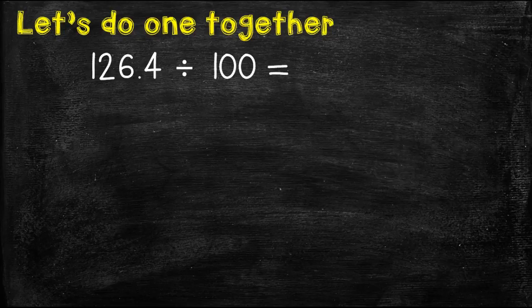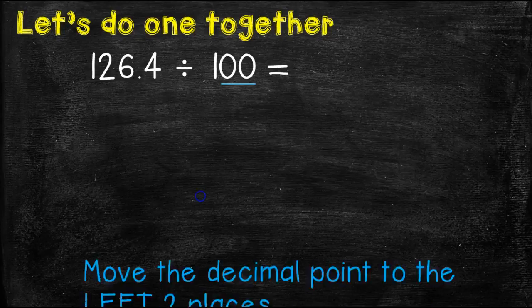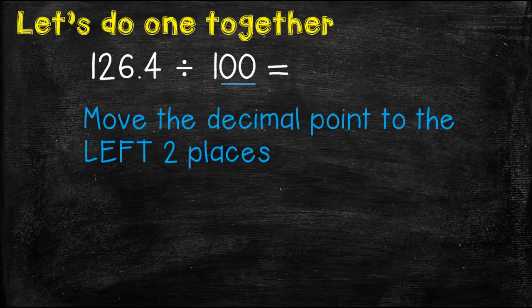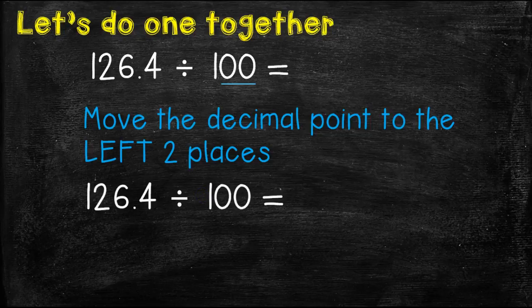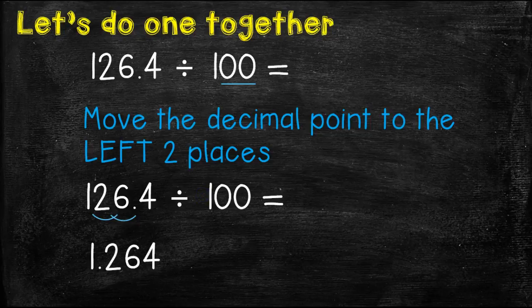So let's do one together. 126 and 4 tenths divided by 100. First thing we need to do is go ahead and count how many zeros we have. 1, 2. So now we need to move the decimal point to the left two places. So there is 1 and there is 2. So we move the decimal between the 1 and the 2, and we get our answer. 1 and 264 thousandths.